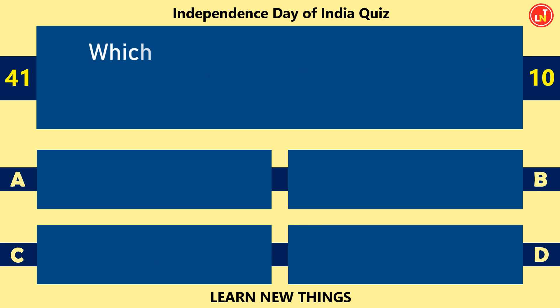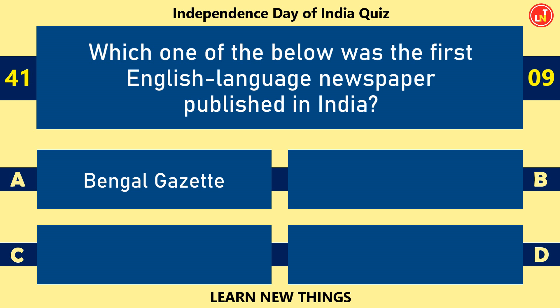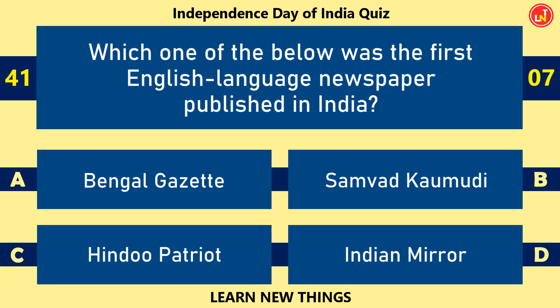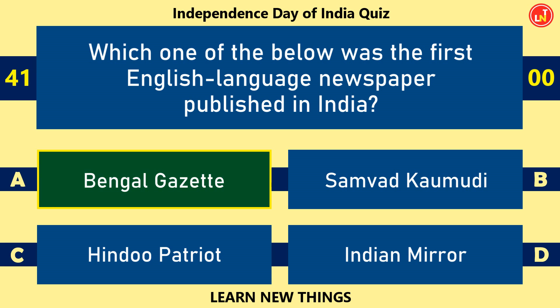Which one of the below was the first English language newspaper published in India? Bengal Gazette.